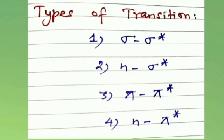According to molecular orbital theory, when a molecule is excited by absorption of energy, its electrons are promoted from bonding to anti-bonding orbitals. The first type is sigma to sigma star transition, which occurs when sigma electrons are promoted to anti-bonding sigma orbitals. When a non-bonding electron (n) gets promoted to an anti-bonding sigma orbital (sigma star), it represents an n to sigma star transition. Similarly, pi to pi star transition represents the promotion of pi electrons to anti-bonding pi orbitals.